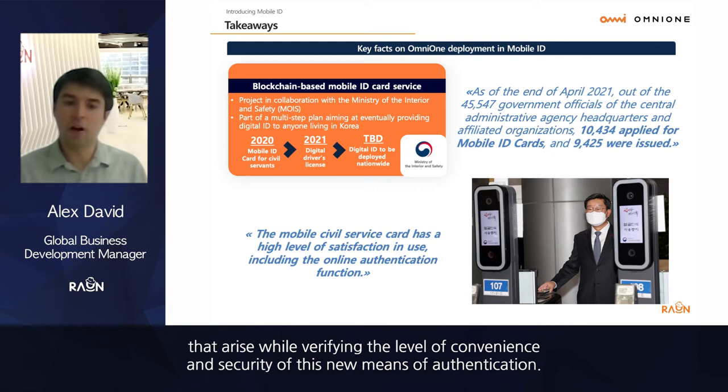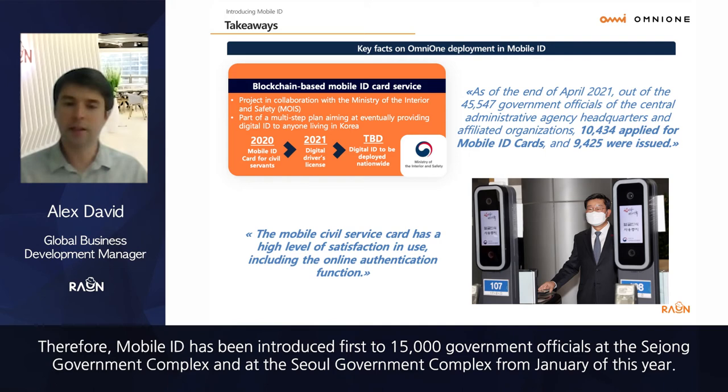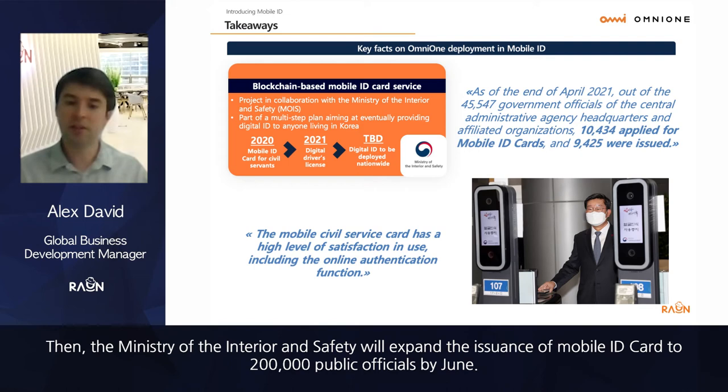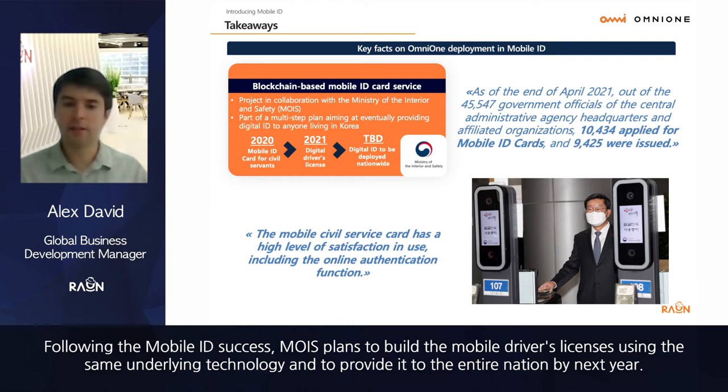Mobile ID was first introduced to 15,000 government officials at the Sejong Government Complex and the Seoul Government Complex from January 2021. The Ministry of Interior and Safety will then expand issuance of the mobile ID card to 200,000 public officials by June of that year. Following the mobile ID's success, MOIS plans to build a mobile driver's license using the same underlying technology and provide it to the entire nation by the following year.